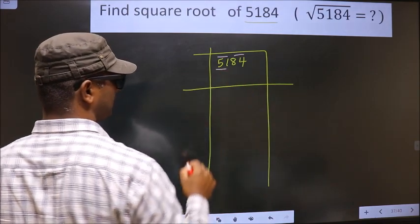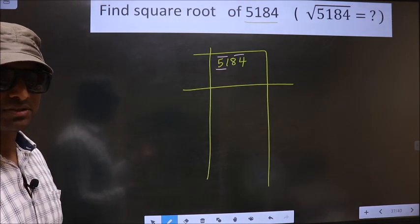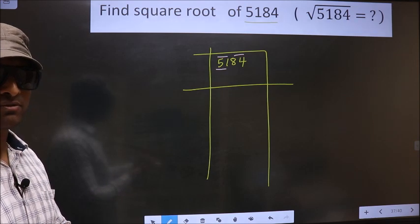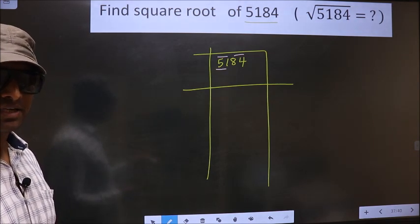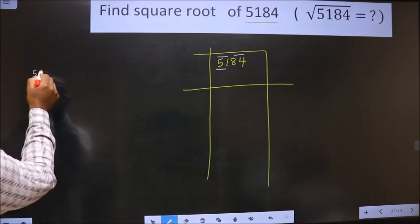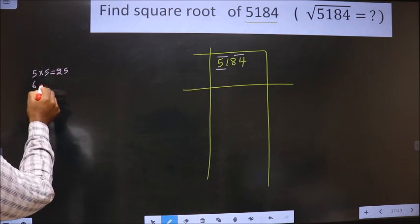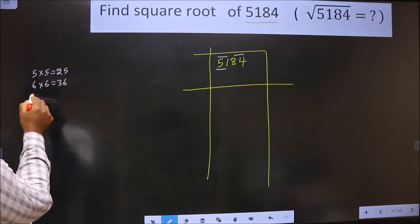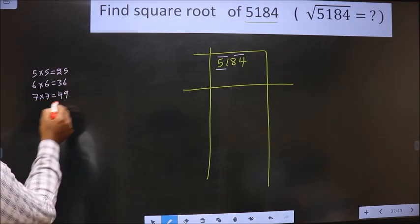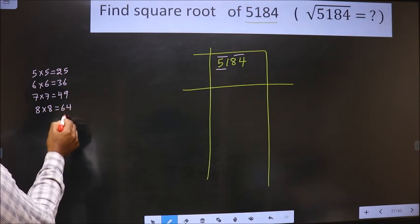Now, here we have 51. 51 is not a perfect square, so we should check which two perfect square numbers 51 lies between. Perfect square numbers are: 5×5=25, 6×6=36, 7×7=49, 8×8=64, and it goes on.